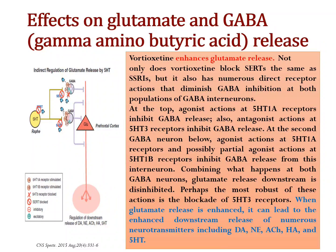Another mechanism of action involves GABA. When glutamate release is enhanced, it can lead to the enhanced downstream release of numerous neurotransmitters including dopamine, norepinephrine, acetylcholine, histamine, and serotonin. By this theory, GABA is not directly involved in elevating symptoms, but it enhances the downstream release of neurotransmitters.